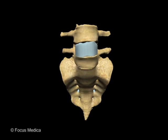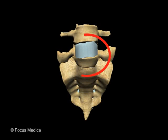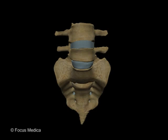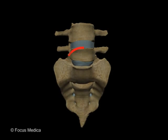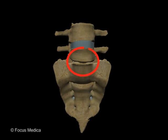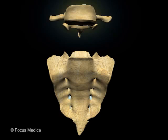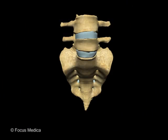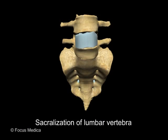Supernumerary vertebrae is a condition where the count of one group of vertebrae may be more occasionally. The L5 vertebra may be fused with the sacrum, a condition called sacralization of lumbar vertebrae.